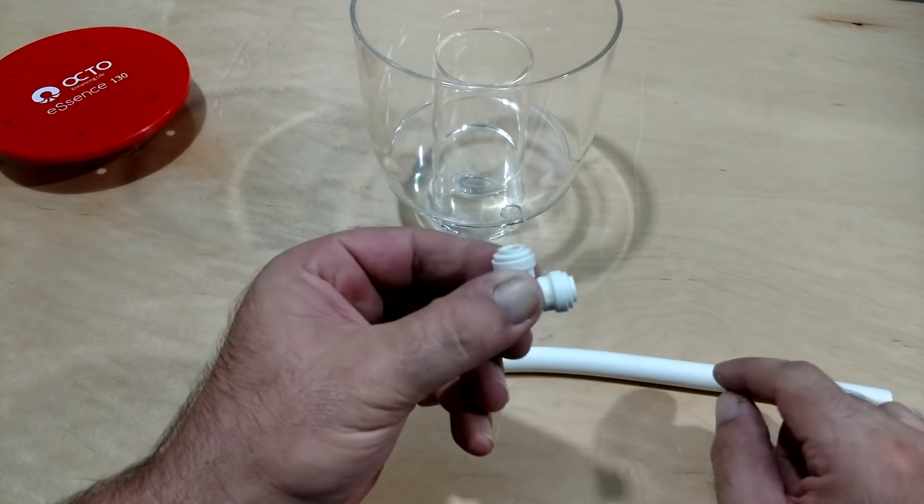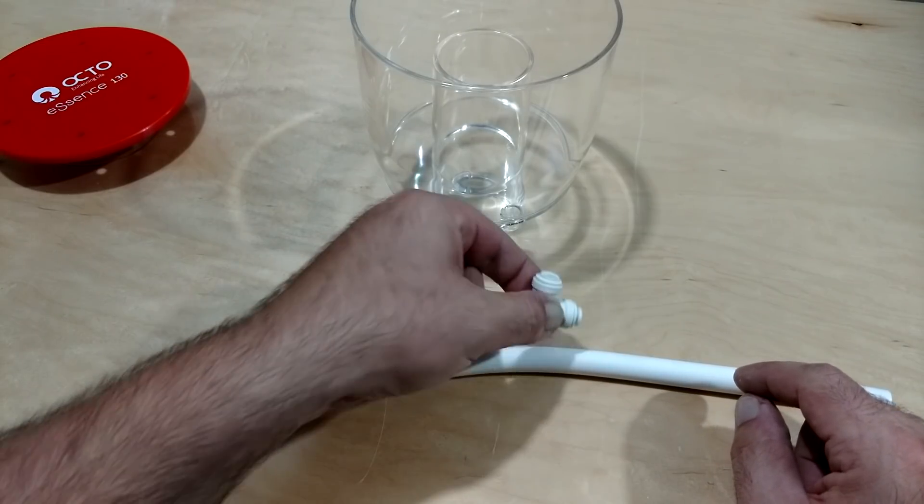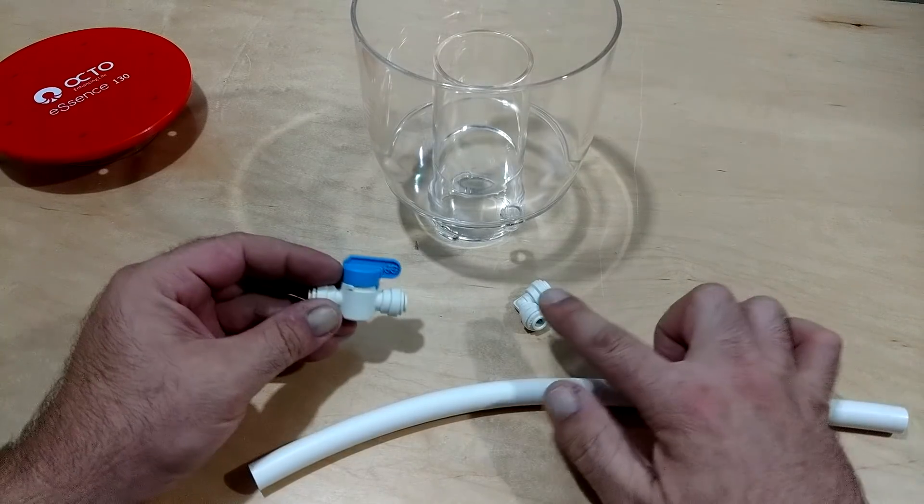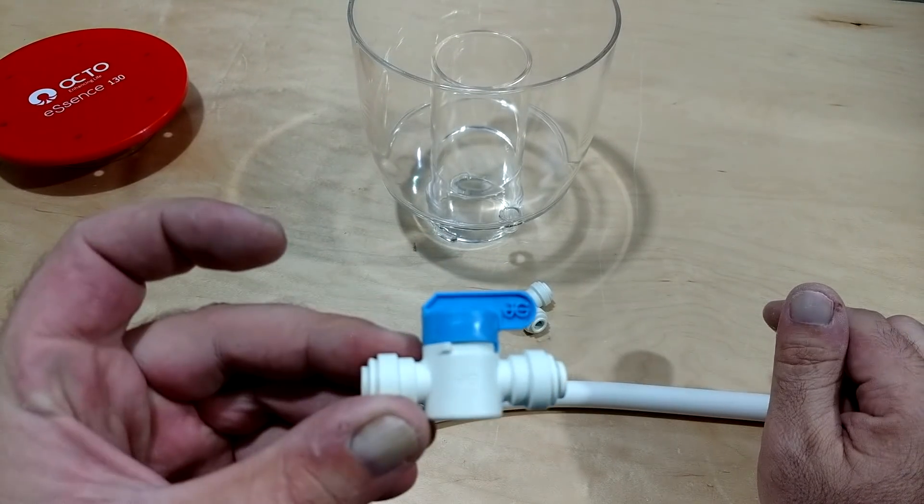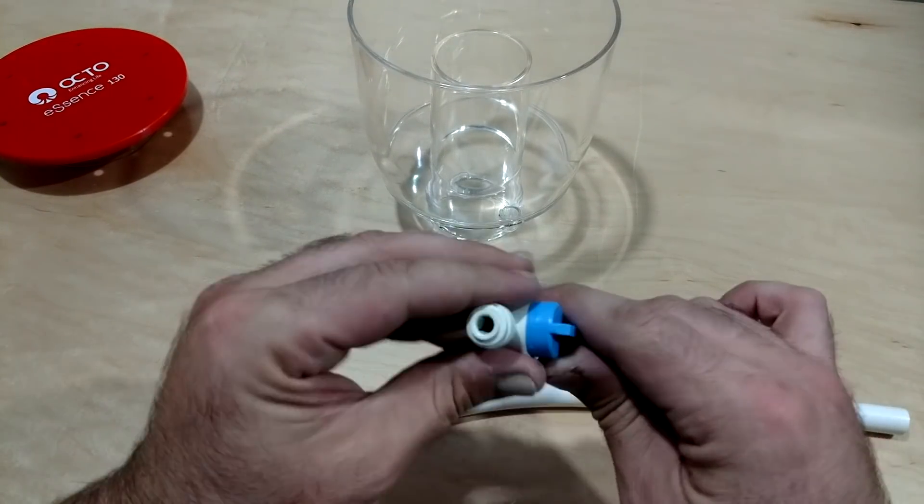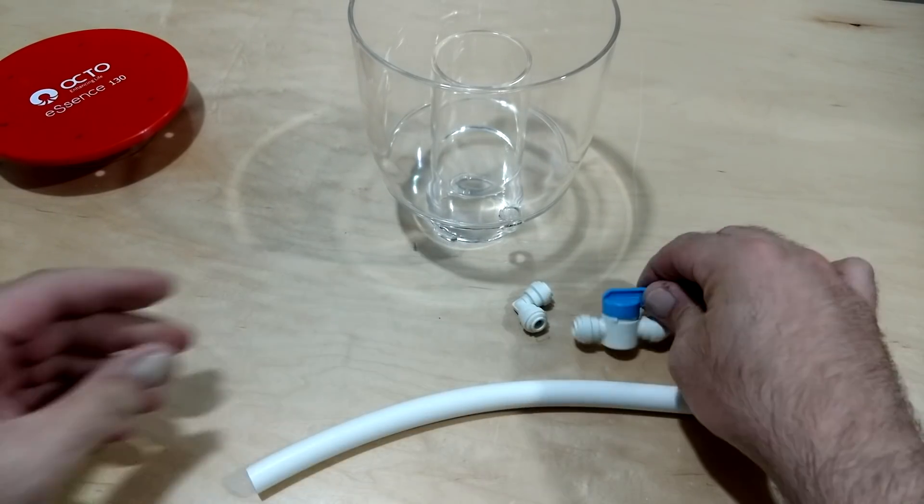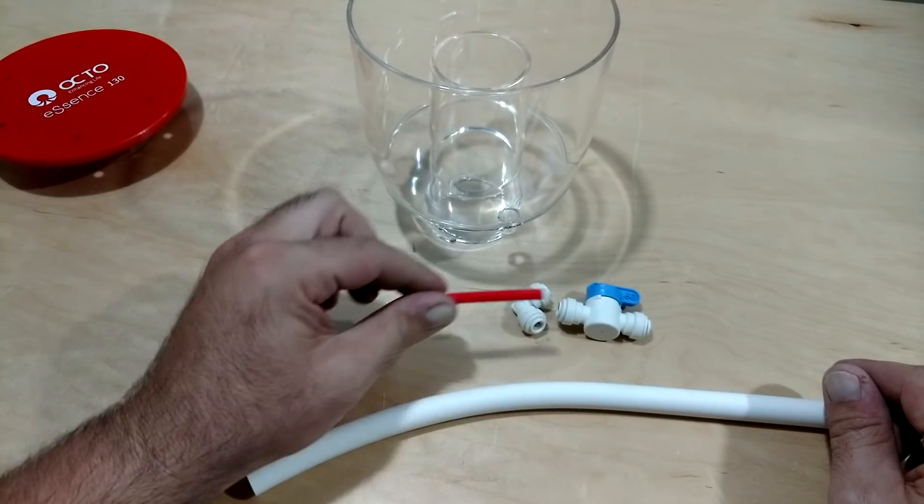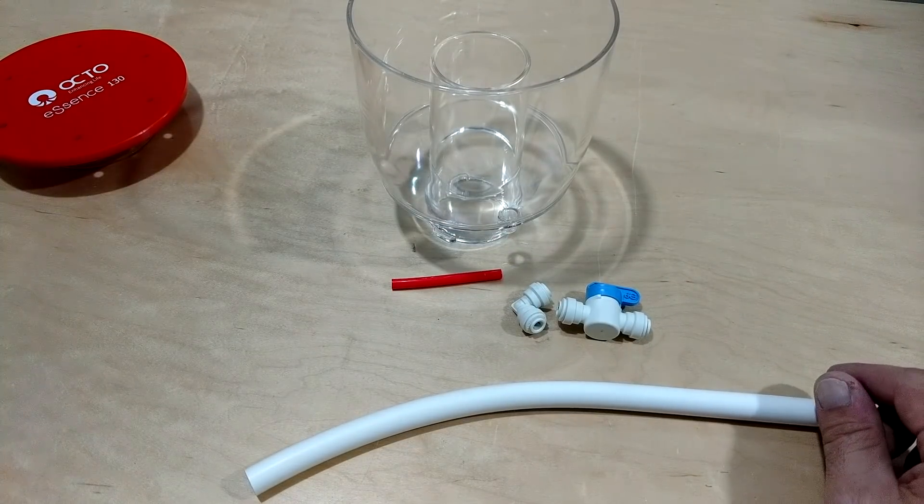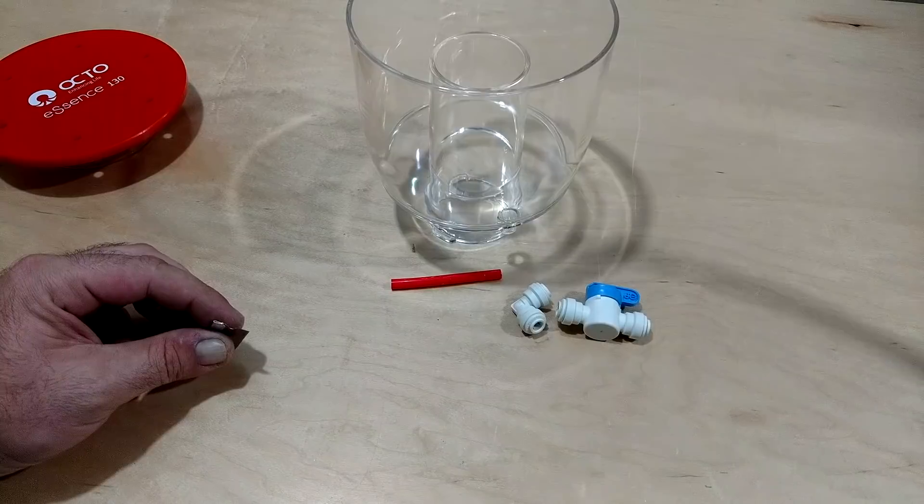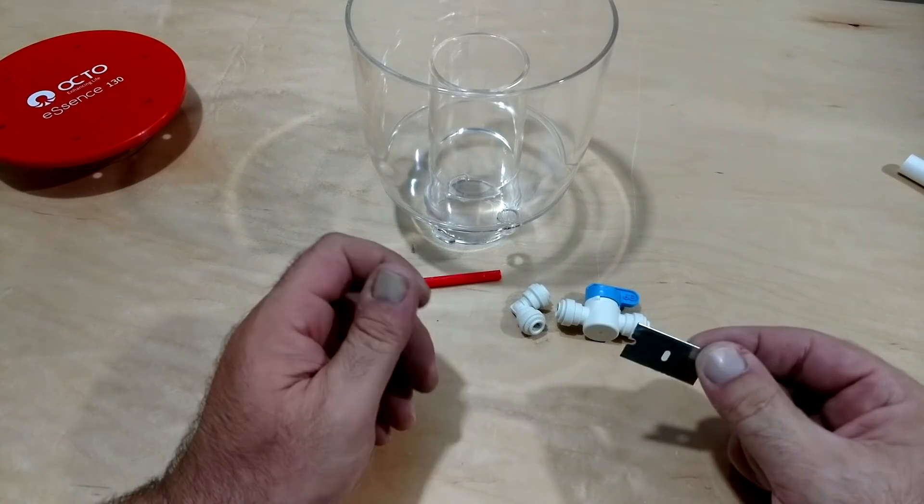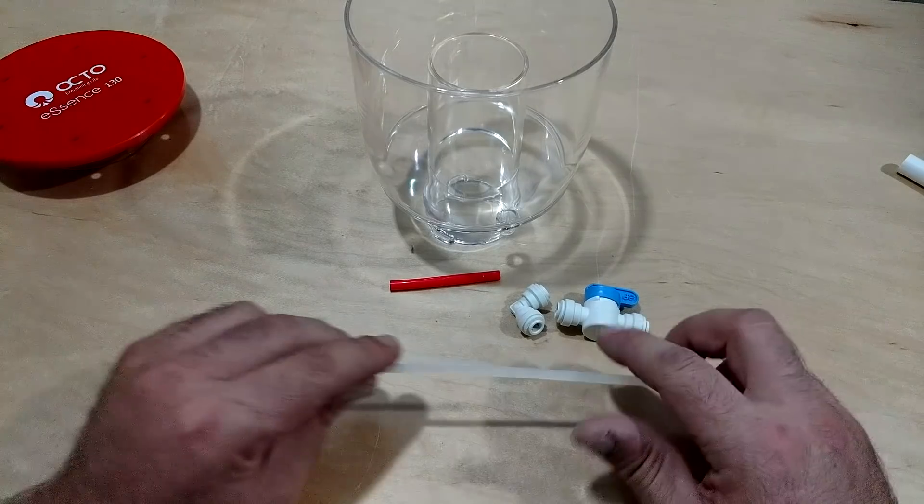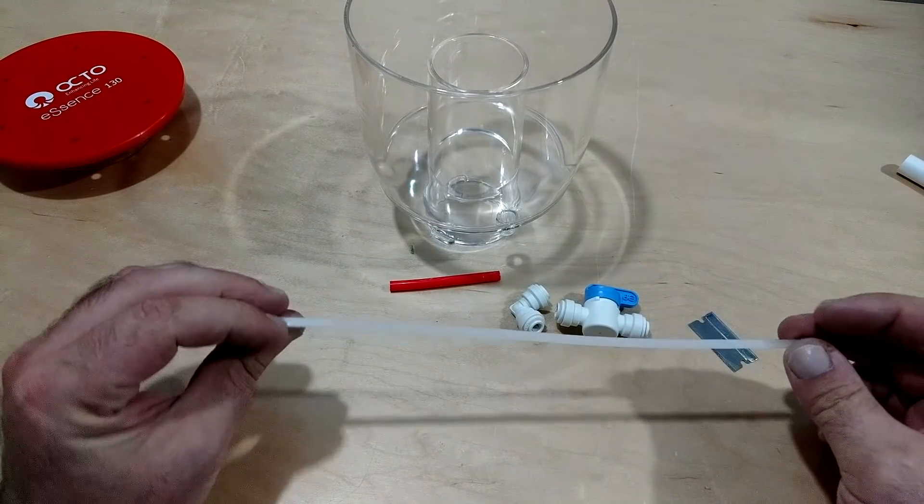It's meant for like an ice maker line, refrigerator line. John Guest is the brand of these, and this is a John Guest quarter inch quarter turn valve. You need a little piece of quarter inch tubing. I chose red because that's the theme that's going to be going on here soon.